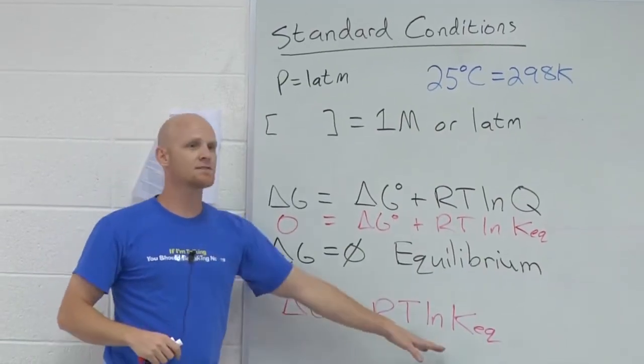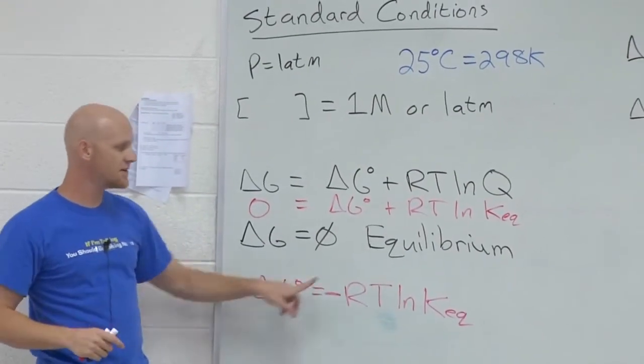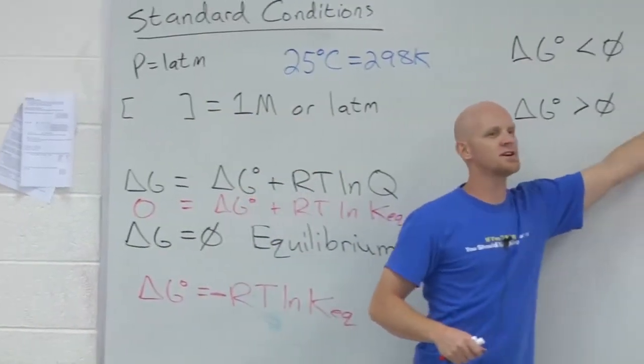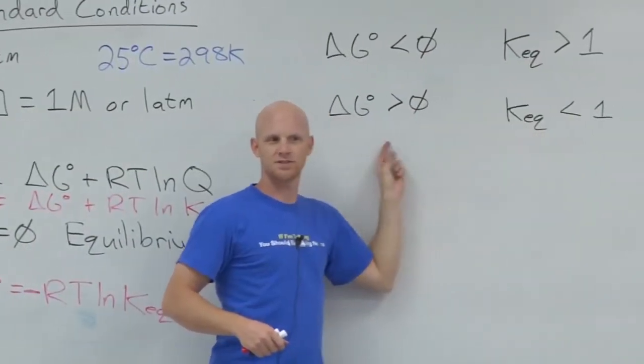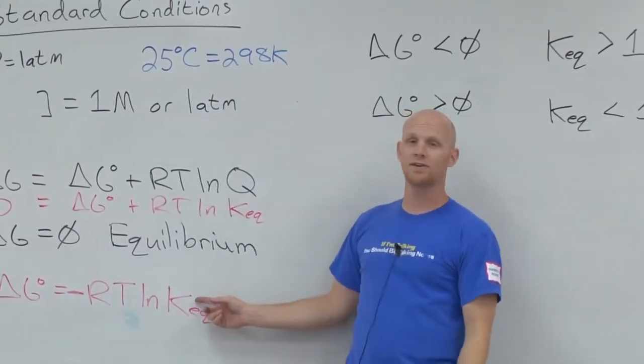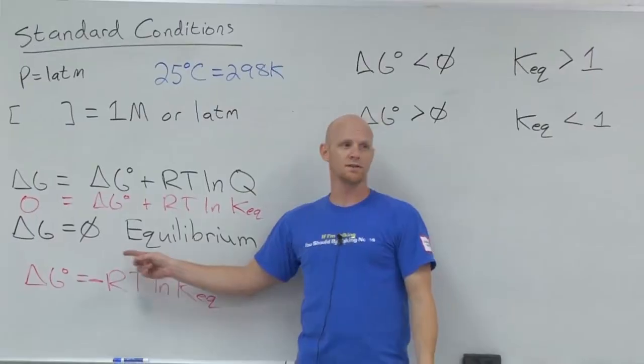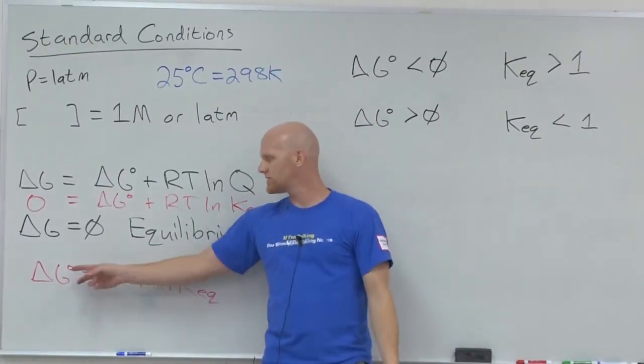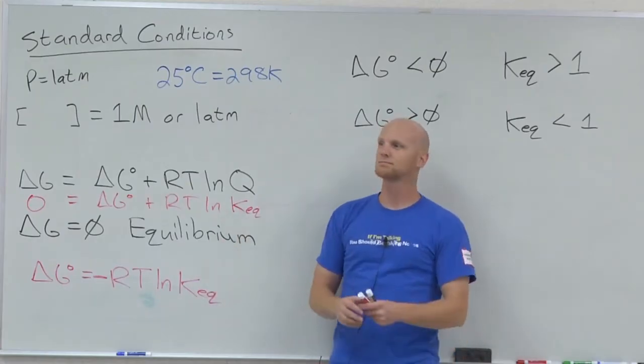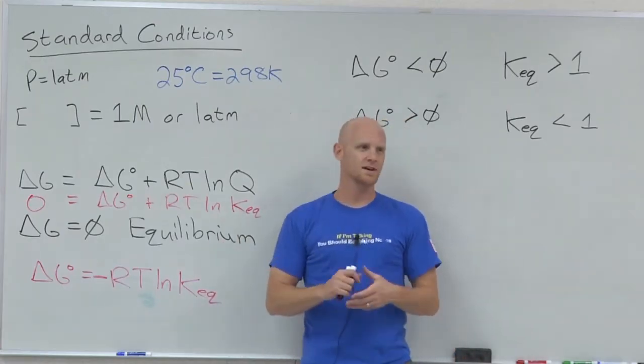And so here is a mathematical relationship between delta G standard and KEQ. It's the same relationship we just established. Here you can actually mathematically calculate things. If I give you KEQ and a temperature, you can calculate delta G standard. If I give you delta G standard and a temperature, you can calculate KEQ. Questions on that?